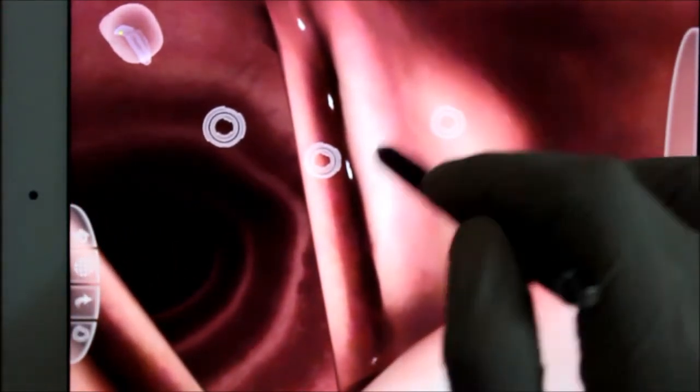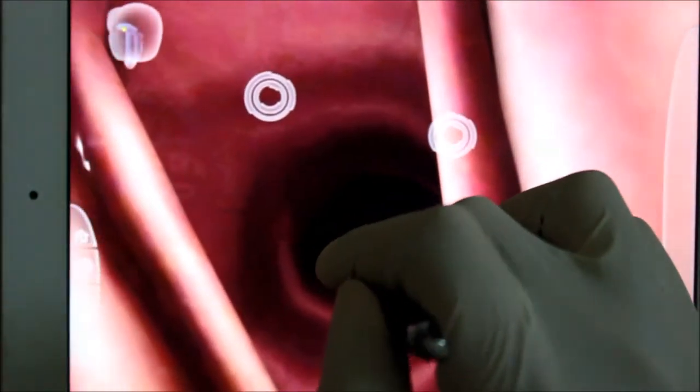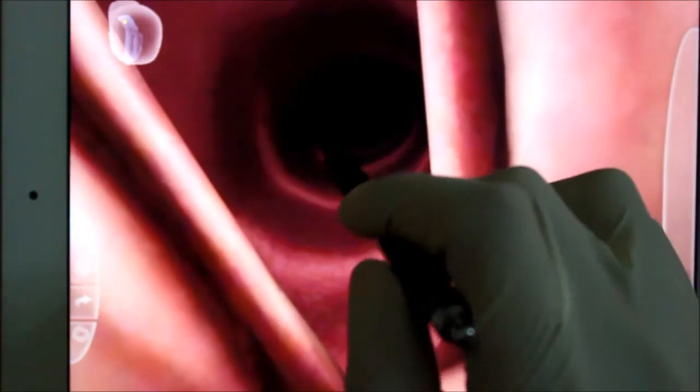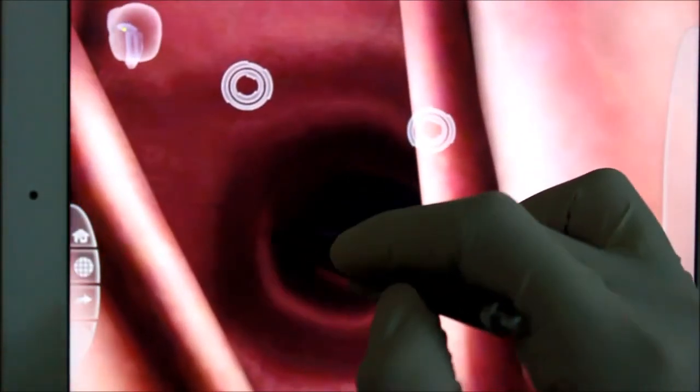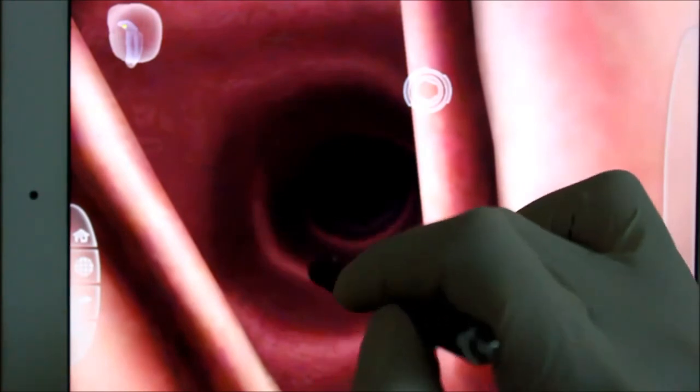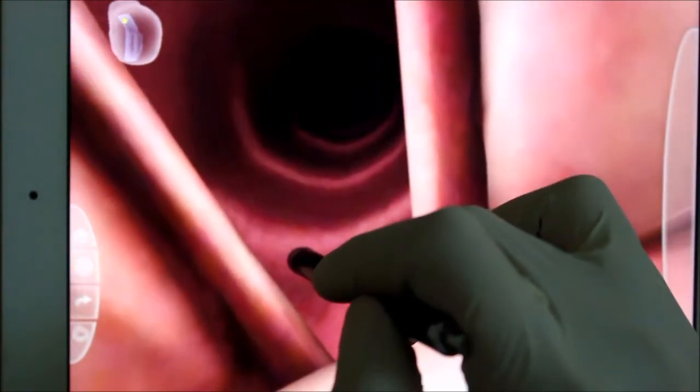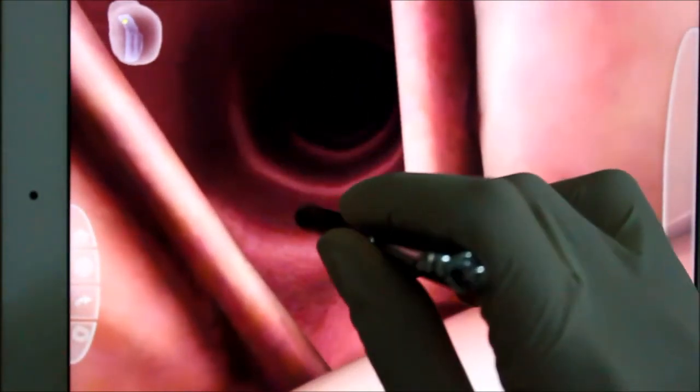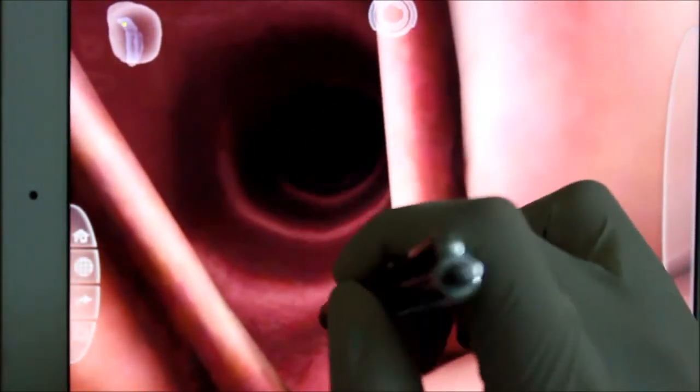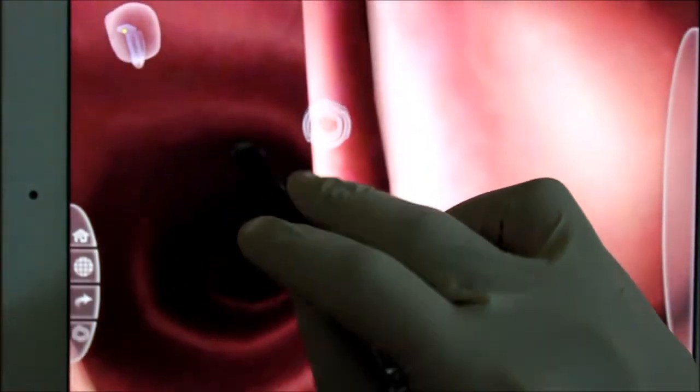It is the false vocal cord and these are the true vocal cords. We cannot go deeper as it will obstruct the patient's airway. Now we can see the grooves there, or the embroidered part - that is part of the tracheal cartilage rings which prevent the airway from collapsing during expiration.